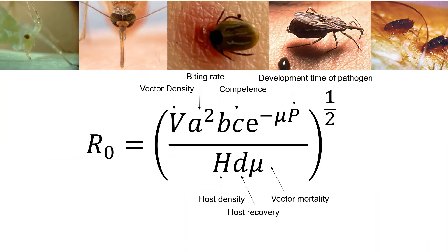This is the R-naught equation that we use to think about vector-borne disease transmission and dynamics, and biting behavior — expressed as biting rate — is a key component of this equation. It highlights the importance of feeding behavior in the transmission of these diseases.